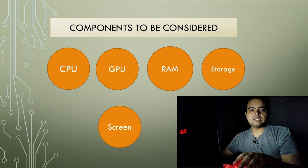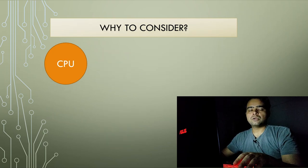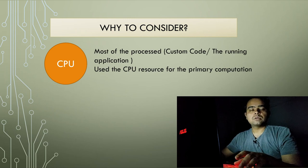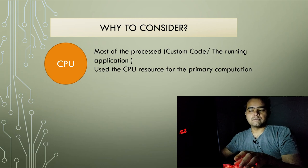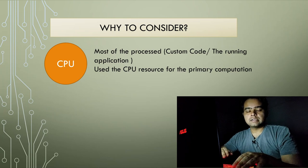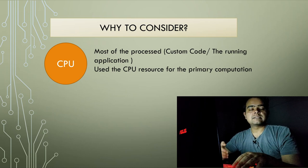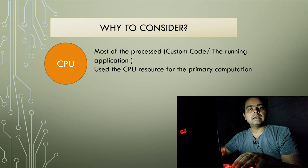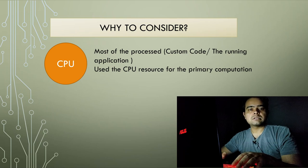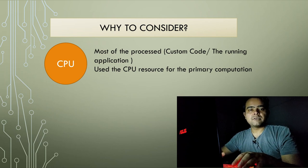First, let's consider the CPU. As we all know, most of our processes — whatever custom code we are writing — most of that gets executed on a CPU. Whatever applications you are using, I'll consider only data science applications here. Whatever IDE you are coding in is also an application, plus the operating system serving everything. Every process is using some part of your CPU, which is why this is an important component to consider.